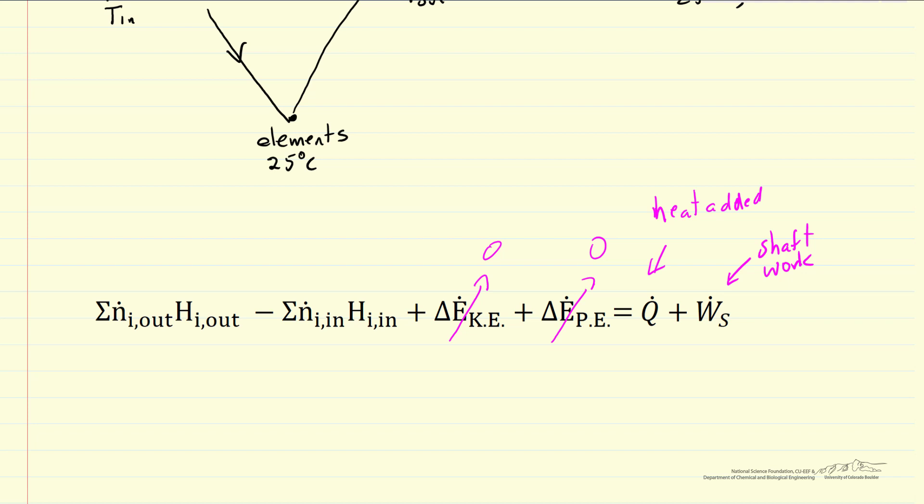Because we're looking at a reactor, a flow system, this is the flow rate of component I, so this is a molar flow rate. This is the term that is important to see the difference from other approaches. This is the enthalpy of component I leaving the system.